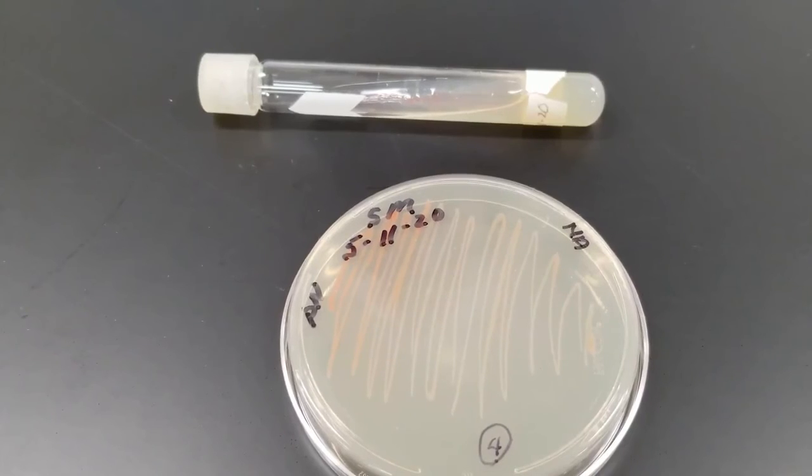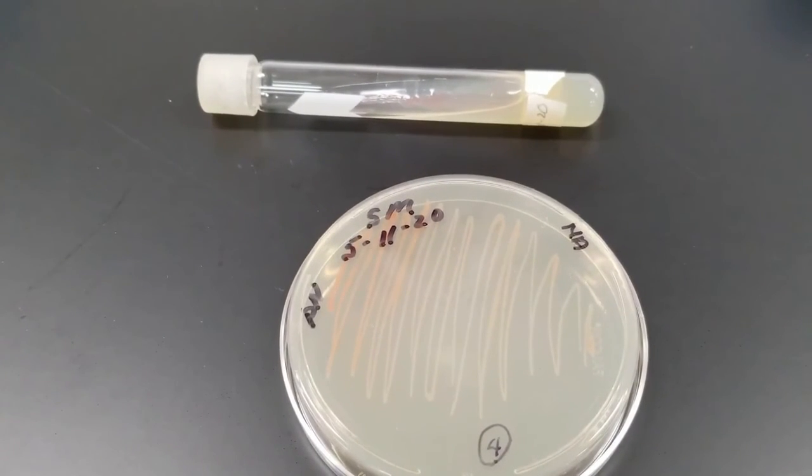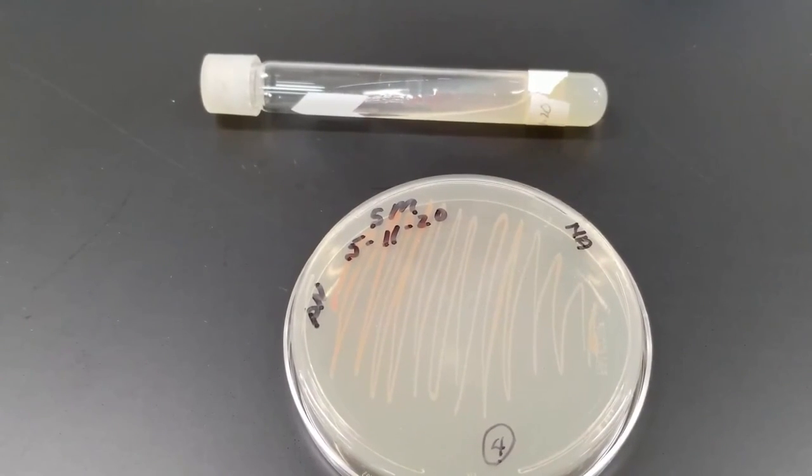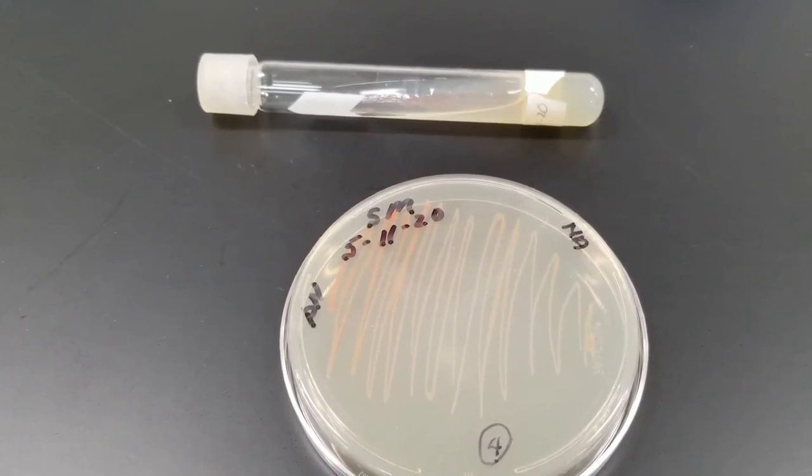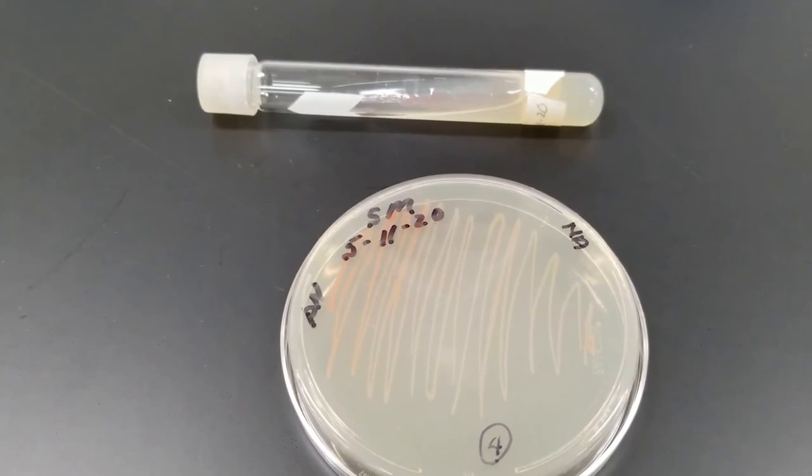Oftentimes you will look at the different characteristics. Nice heavy growth there. Notice the color. One of the big things you'll want to notice is the pigmentation whenever you have a bacterial culture you're working with. That can give you clues as to the identification of it.